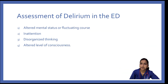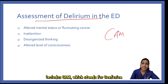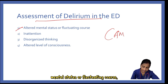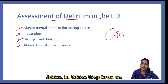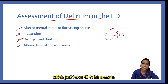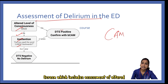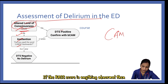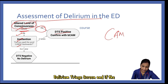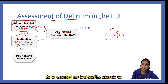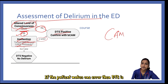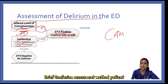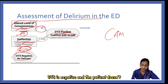Coming to assessment of delirium in the emergency department, the method used includes CAM — the Confusion Assessment Method. Its components include altered mental status or fluctuating course in attention, disorganized thinking, and altered level of consciousness. In the emergency room, we use a two-step approach: a highly sensitive screening tool called the Delirium Triad Screen, which can be performed rapidly in 10 to 20 seconds to rule out delirium. It assesses altered level of consciousness using the RAS score. If RAS is abnormal, DTS is positive. If RAS is normal, the patient is assessed for inattention by asking them to spell the word 'lunch' backward. If the patient makes one error, DTS is positive. If no error, DTS is negative and the patient does not have delirium.